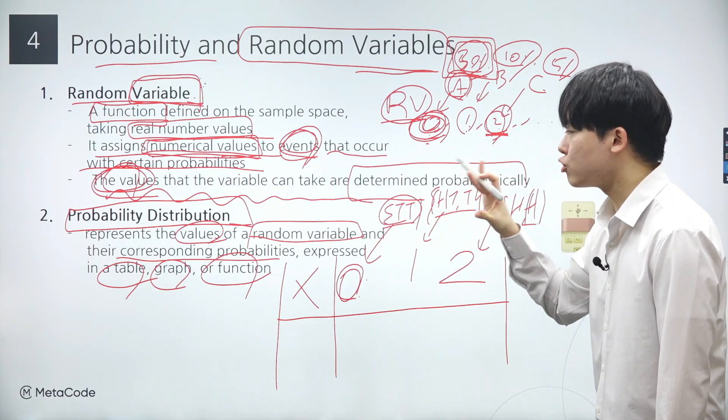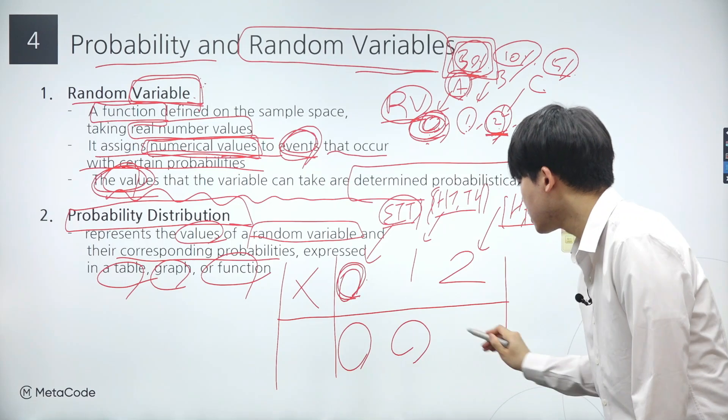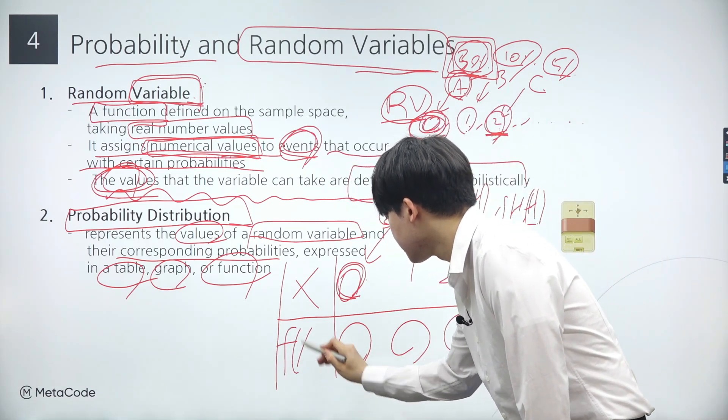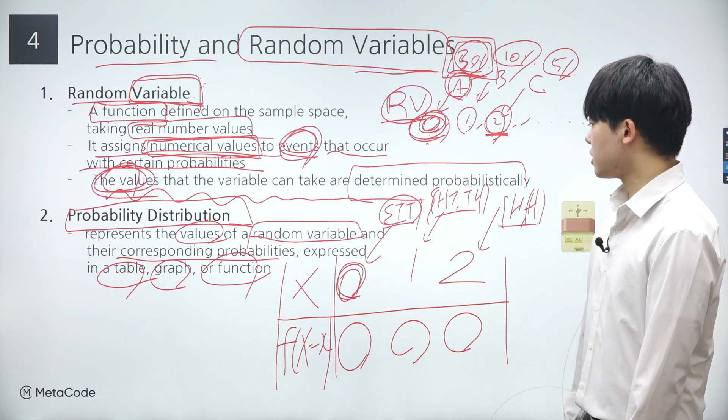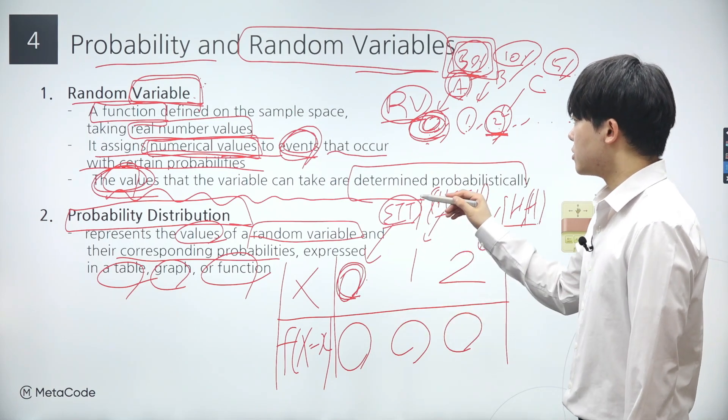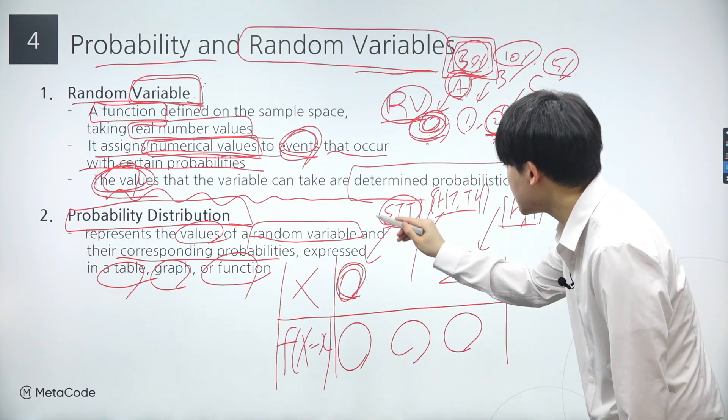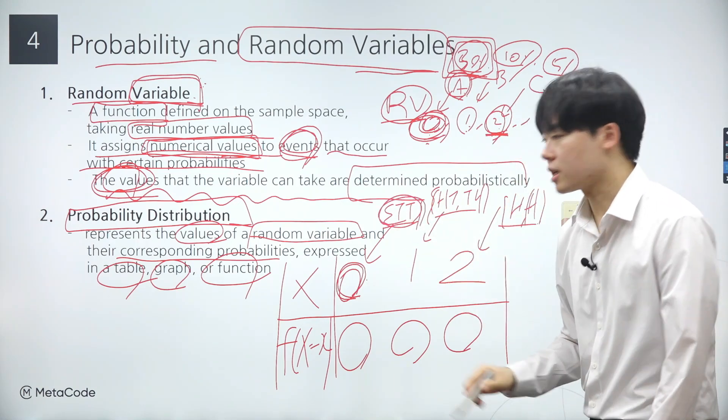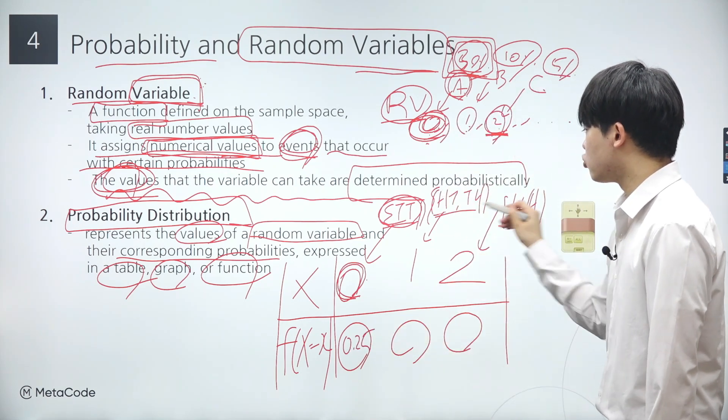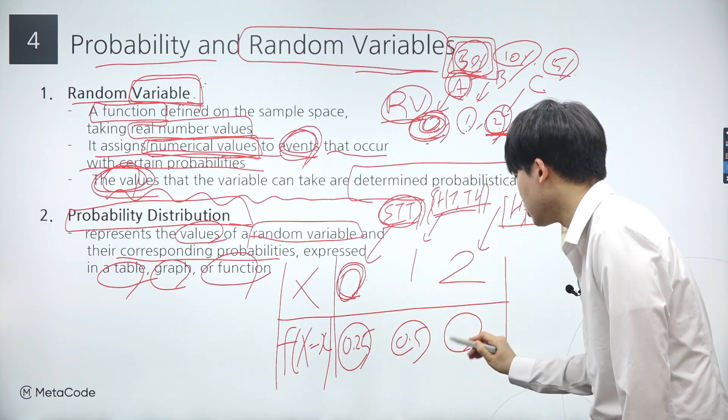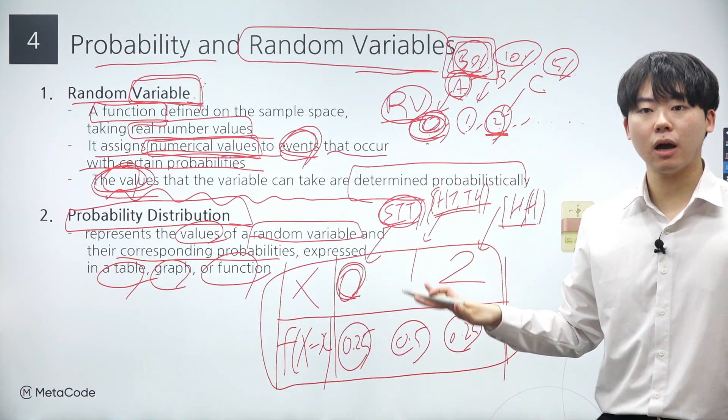Therefore, for every value returned by the random variable, there's a corresponding event. Moreover, for each associated event, there's an associated probability, denoted as f of x, implying that each value is associated with a probability. Given that the size of the sample space is 4, and there's only one outcome in the event associated with 0, the probability of this event is 0.25. Similarly, we can calculate the probabilities associated with other values as well.